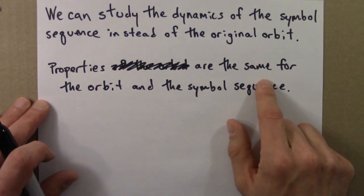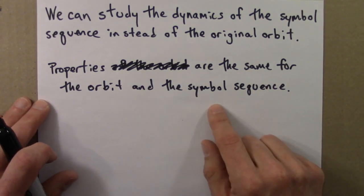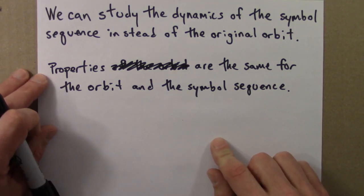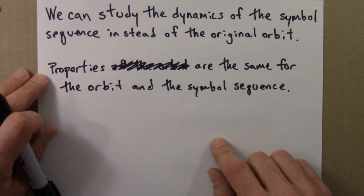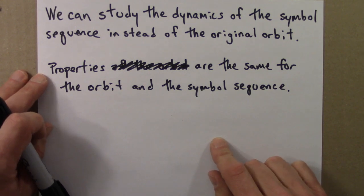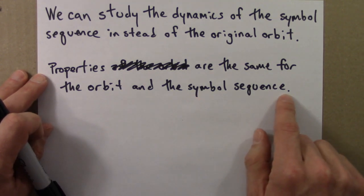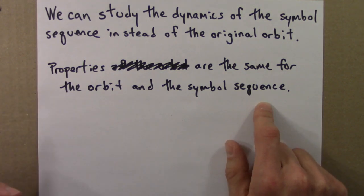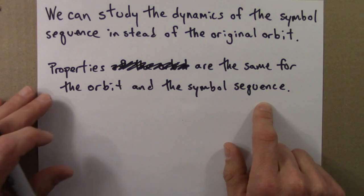Properties are the same for the orbit and the symbol sequence. When I say properties, what I mean is the existence of fixed points and the stability of fixed points. The symbolical dynamical system involving just the symbols L and R would have the same number of fixed points and their stability would be the same.